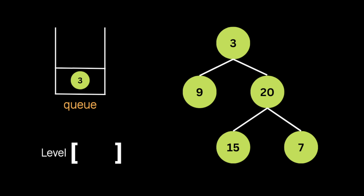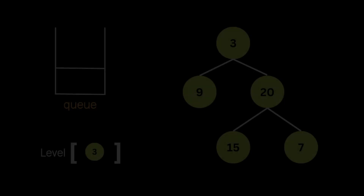Then we create an output list to keep storing the nodes at each level of our binary tree. At each iteration we pop the element from the queue and append it to the list representing the current level. Let's take an example so you can visualize the solution. Say we have this input binary tree — first we create a queue and also create the output list.